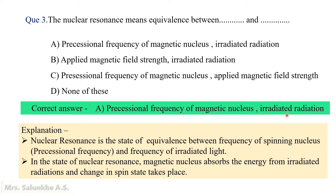Thus, the nuclear resonance is the state of equivalence between the precession frequency of the magnetic nucleus and the frequency of irradiated radiations. When the nucleus is under resonance, it absorbs energy from the irradiated radiations and a change in spin state occurs. Remember: nuclear resonance = equivalence between precession frequency of magnetic nucleus and frequency of irradiated radiation.